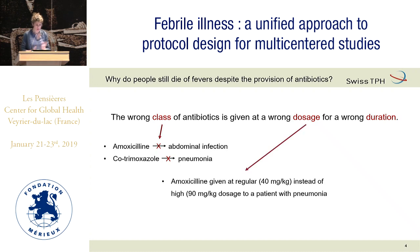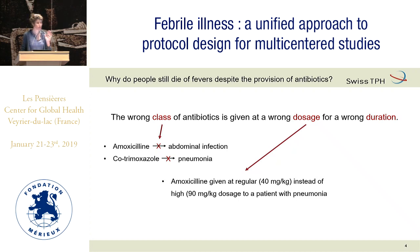Another example on dosage: clinicians often prescribe amoxicillin at the normal dosage of 40 mg/kg instead of 90 mg/kg for pneumonia. It is systematically underdosed, although there are very clear WHO guidelines. They tend to always prescribe less than what is required.